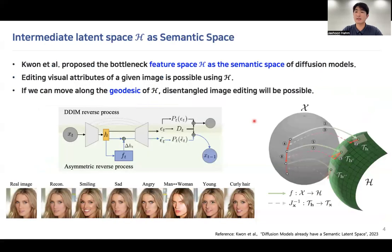The second latent space we use is h. Kwon et al. proposed the bottleneck feature space h of U-Net as a semantic space of diffusion models. When one can find a meaningful editing direction in this space, editing visual attributes of a given image is possible. So if we can move along the geodesic of h, this disentangled image editing will be possible.